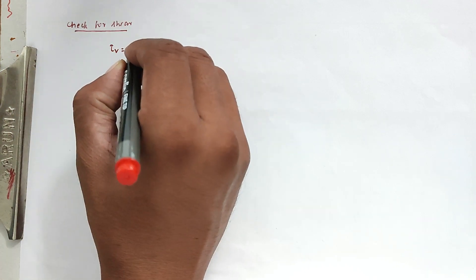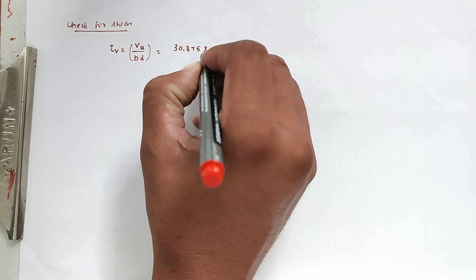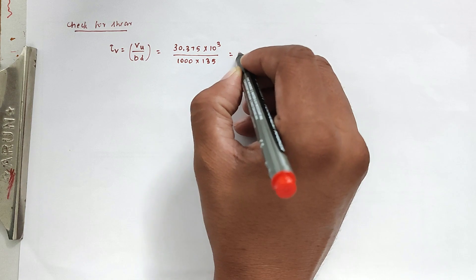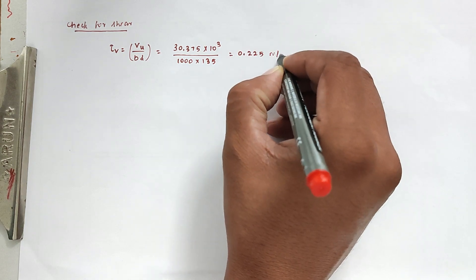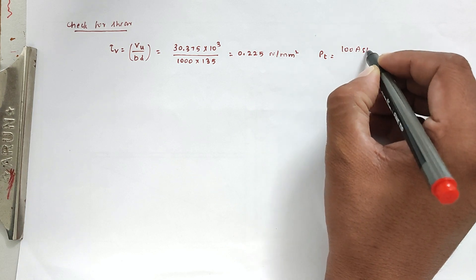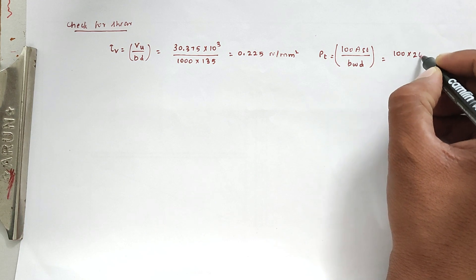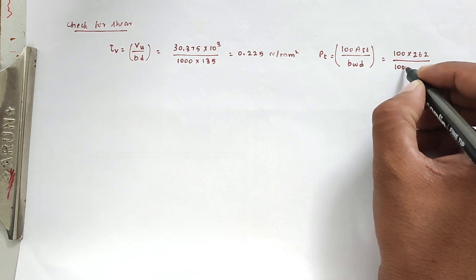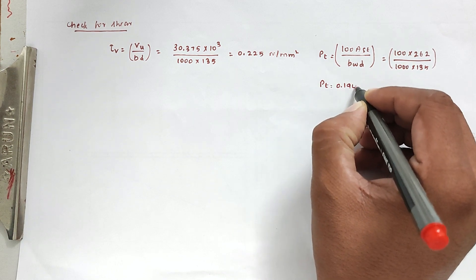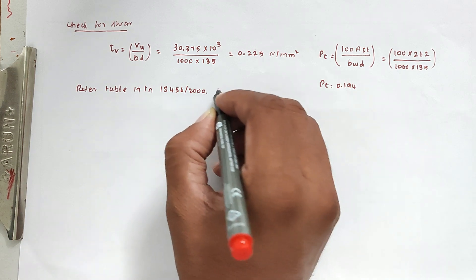Shear stress check: τv = Vu / (b × d) = 30.375 × 10³ / (1000 × 135) = 0.225 N/mm². Percentage of reinforcement: pt = 100 × Ast / (bw × d) = 100 × 262 / (1000 × 135) = 0.194%. Refer Table 19 of IS 456:2000 for permissible shear stress.